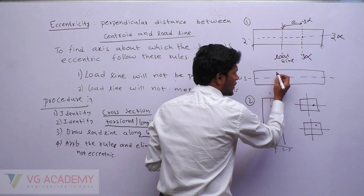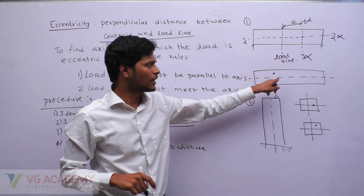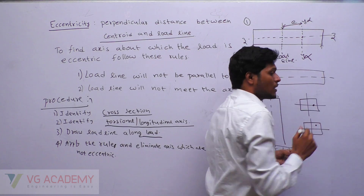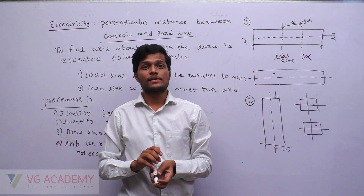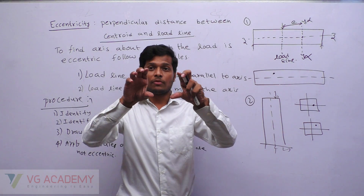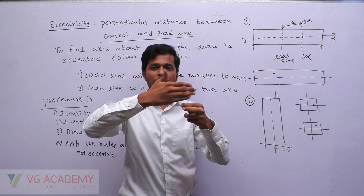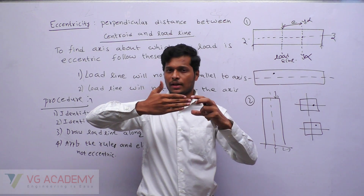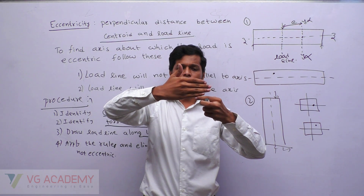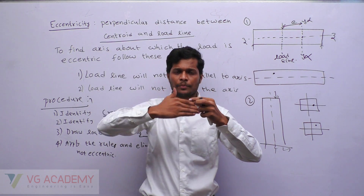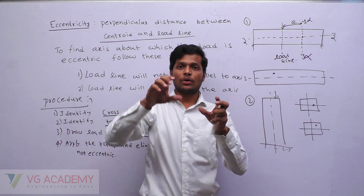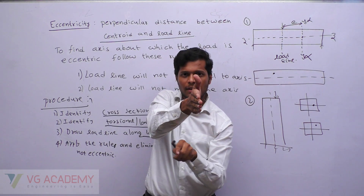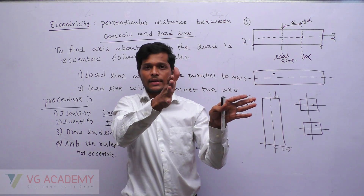Suppose if the load is not meeting the longitudinal axis, then it is not eccentric about that axis either. So your answer is both the X axis and also the Z axis — meaning the beam will both bend and twist. Because from the center line the load is slightly deviating, it will twist the beam. And also because of the lateral load, it will cause bending in the Y direction.